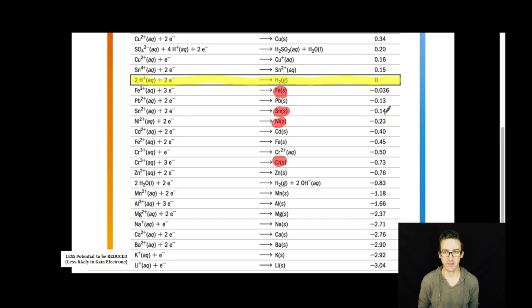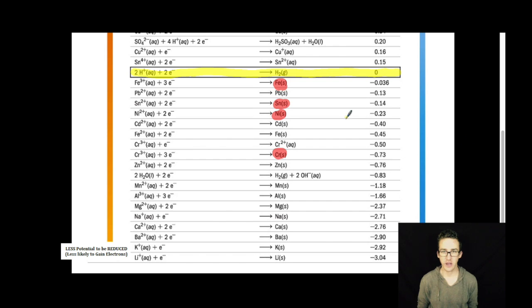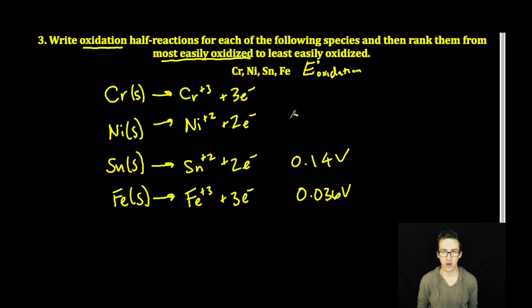Tin has a reduction potential of negative 0.14, so its oxidation potential is going to be positive 0.14 volts. Nickel has a reduction potential of negative 0.23 volts, so its oxidation is going to be positive 0.23 volts.